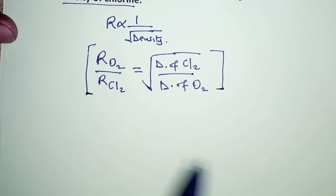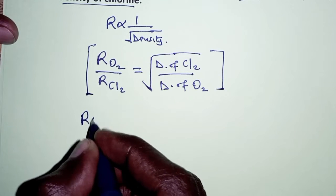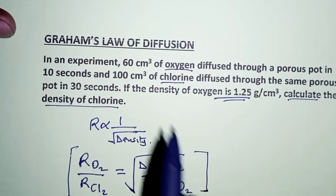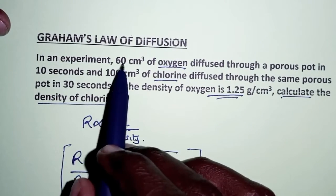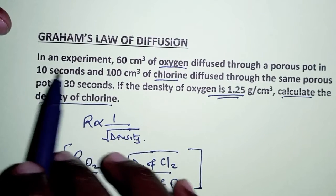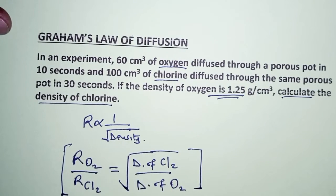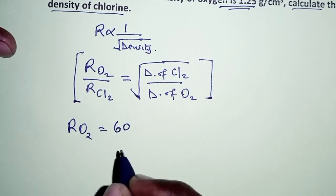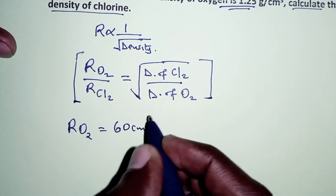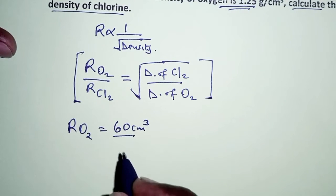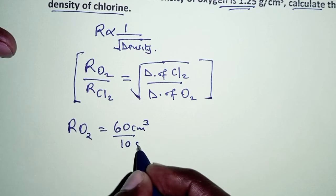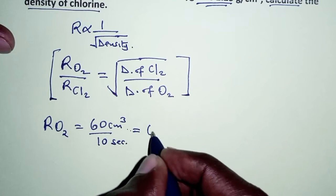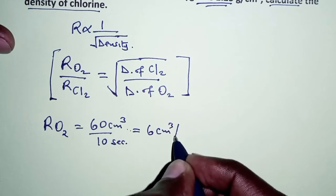In this formula, we are required to first get the rate of diffusion for both gases. To get the rate of diffusion of oxygen, we take the volume — which is 60 cubic centimeters — divided by the time taken, which is 10 seconds. This gives us a rate of 6 cubic centimeters per second.